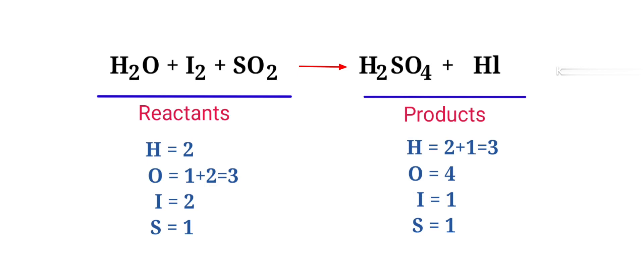If you look at this equation, the equation is not balanced. In the reactants side, there are 2 hydrogen atoms, 3 oxygen atoms, 2 iodine atoms and 1 sulfur atom present.